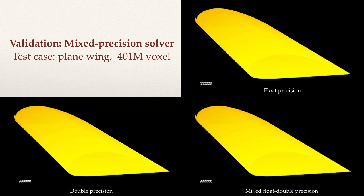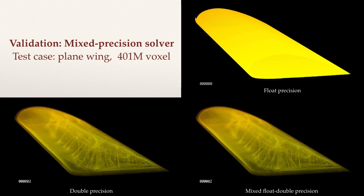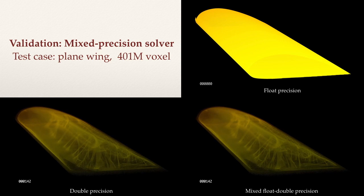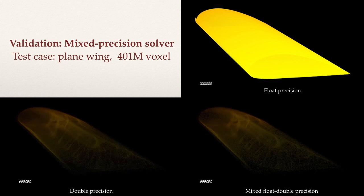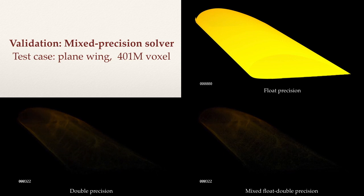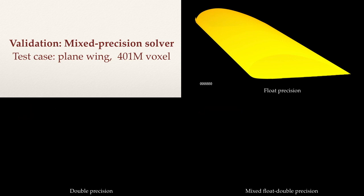On the wing example, the mixed precision solver is as effective as the double precision solver. In contrast, due to the poor condition number of the global stiffness matrix, the float precision solver will cause conjugate gradient to report a singularity, which makes it impossible to reduce the residual.